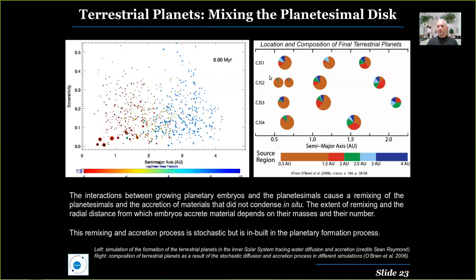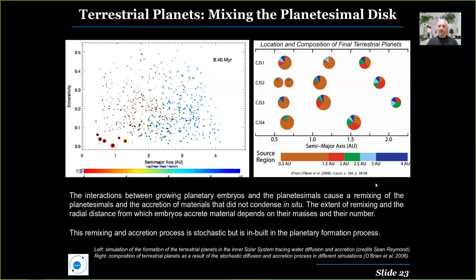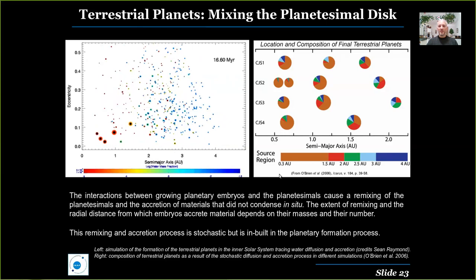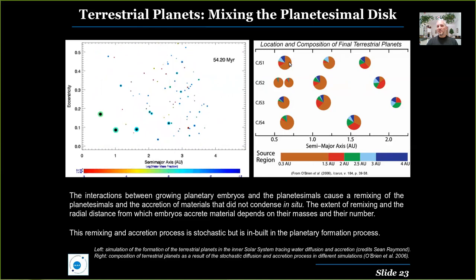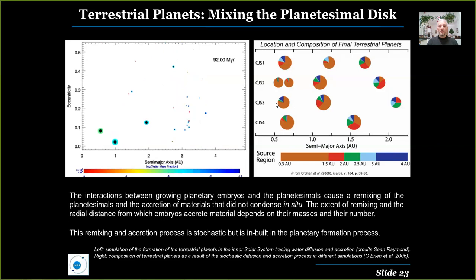This process is stochastic in nature. An example of this stochasticity is shown in the right plot, where you can see pie diagrams showing the composition of the planets formed in different simulations, in terms of material coming from different distances from the sun. The process is random and stochastic: the number of planets is not constant, nor is the mass or the distance. The final planets have very different compositions from one case to the other, and they all include a mix of material from different regions.